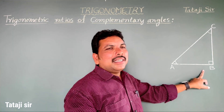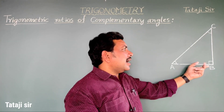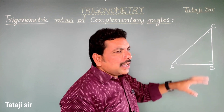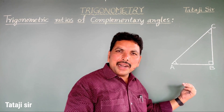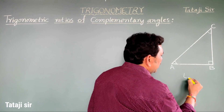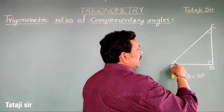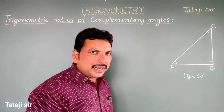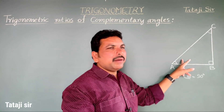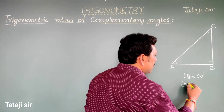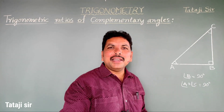Consider a right angle triangle ABC with a right angle at B. Since angle B is 90 degrees, and the sum of angles in a triangle is 180 degrees, the sum of the remaining two angles must be 90 degrees. So angle A plus angle C equals 90 degrees, meaning angle A and angle C are complementary angles.